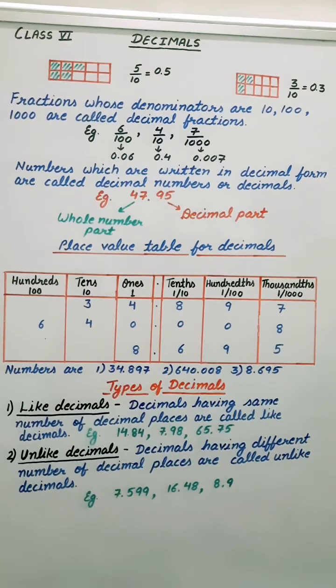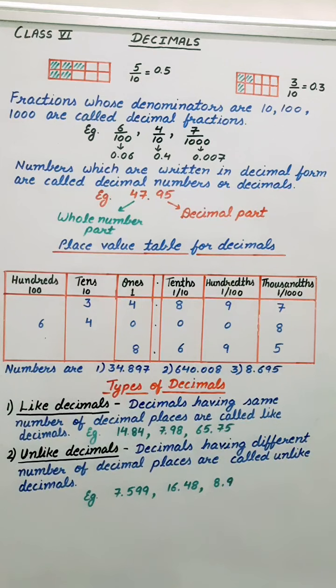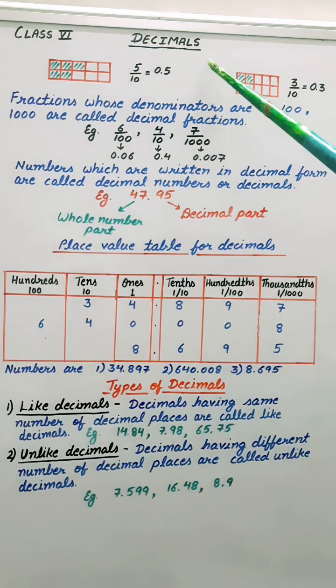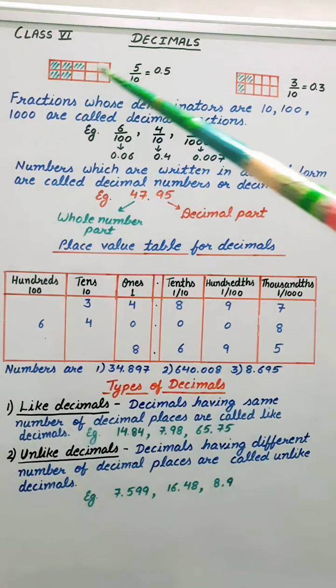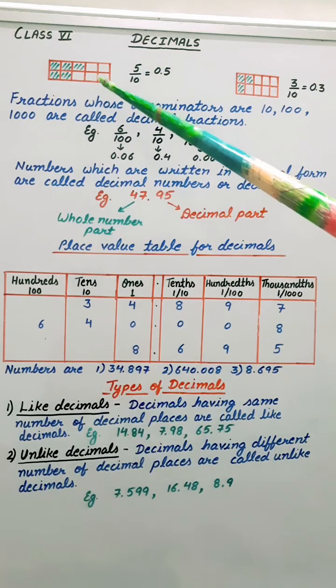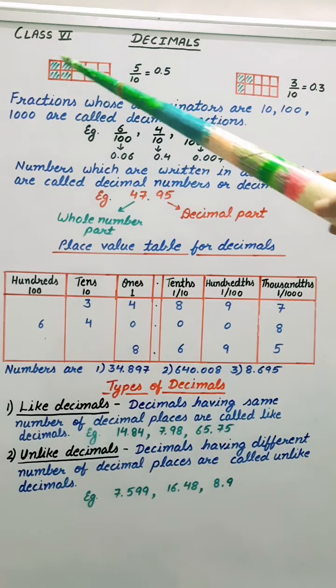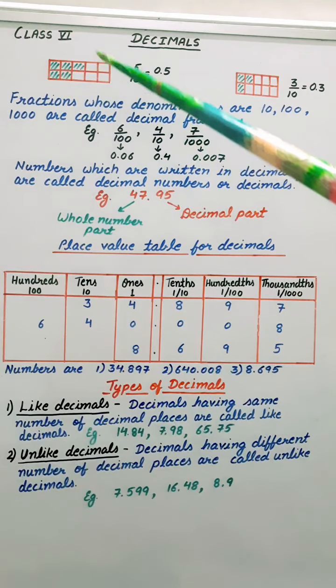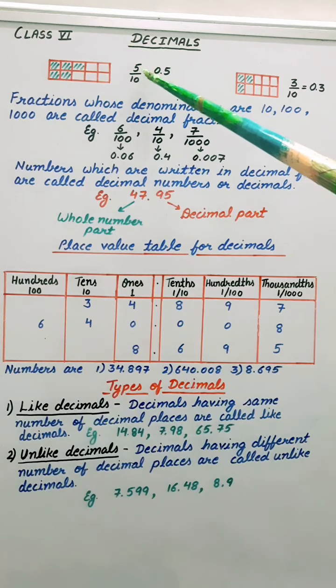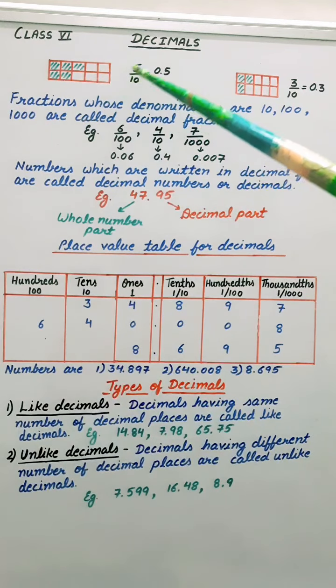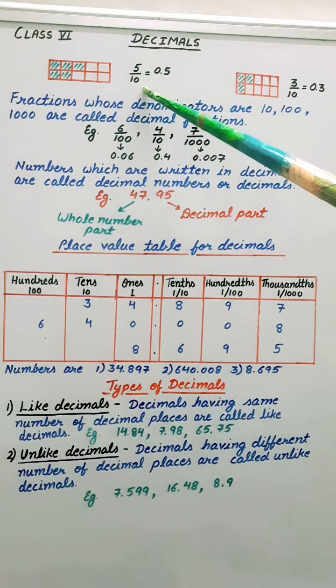Good morning children. Let's begin chapter number 7, Decimals. As we have already studied fractions, see this. Here out of 10 equal parts, 5 parts are shaded. So in fraction it can be written as 5 upon 10.